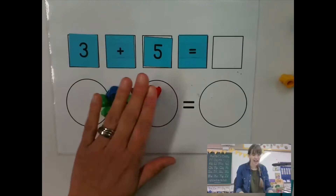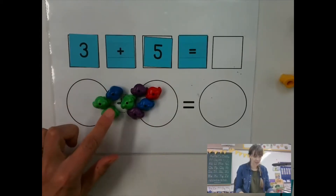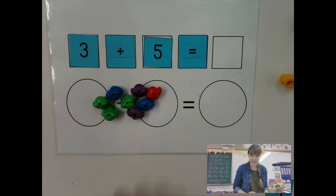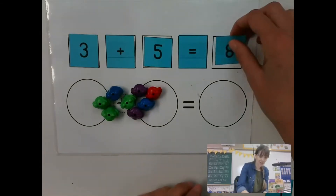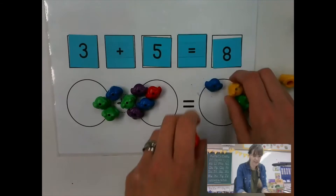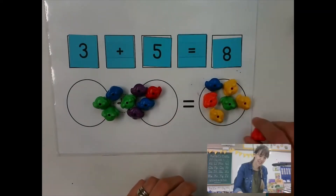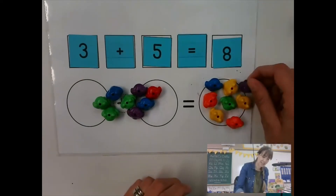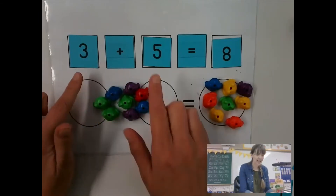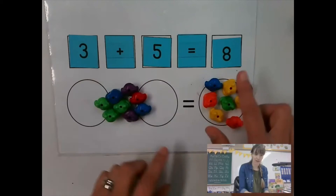So three and five make one, two, three, four, five, six, seven, eight — that makes eight. So I count them again: one, two, three, four, five, six, seven, eight. So eight and eight — they're equal. I added a group of three and a group of five together and that made eight.